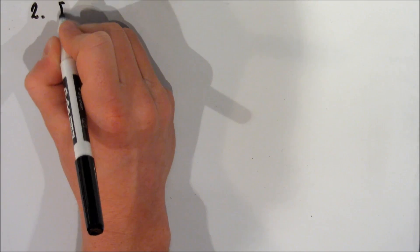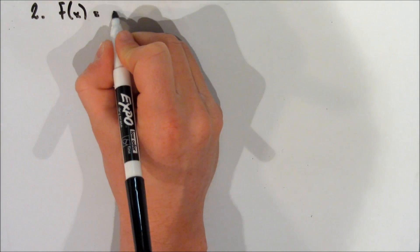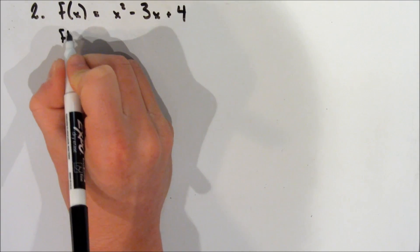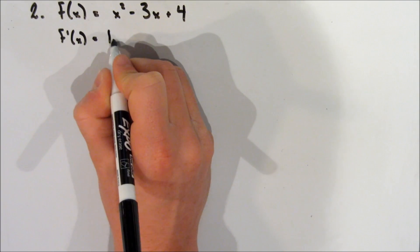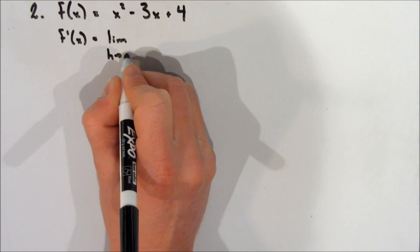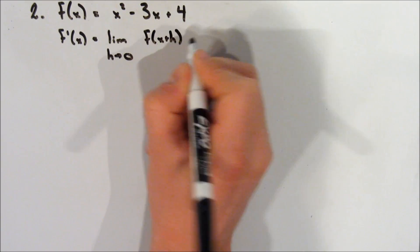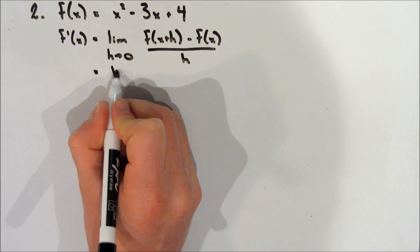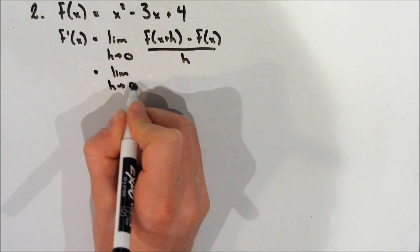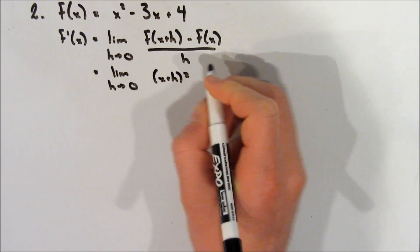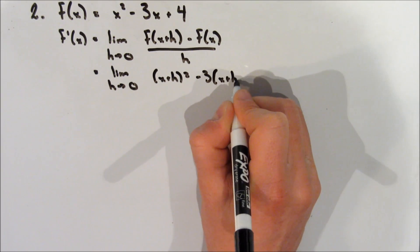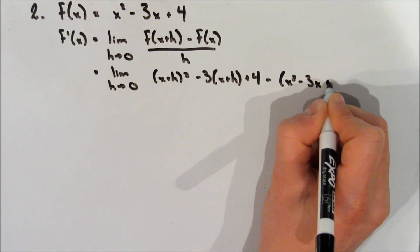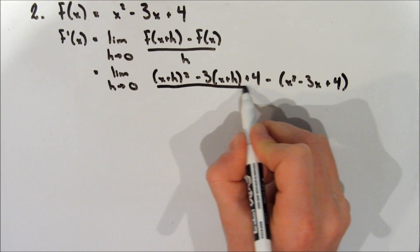Here's another example — this one's a bit trickier. Our function f of x is equal to x squared minus 3x plus 4. To find the derivative, we write f prime of x is equal to the limit as h approaches 0 of f of x plus h minus f of x over h. We sub in x plus h wherever there's an x: so we get x plus h squared minus 3 times x plus h plus 4, minus the whole f of x, all over h.